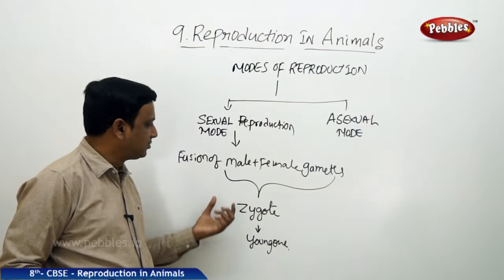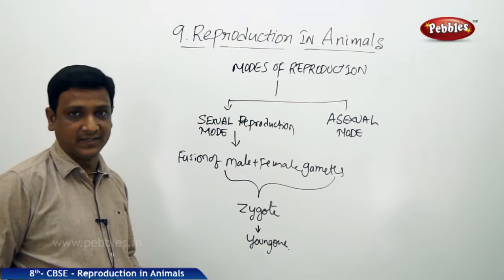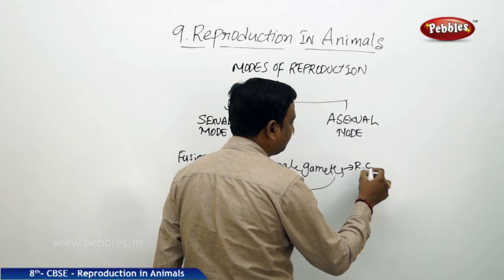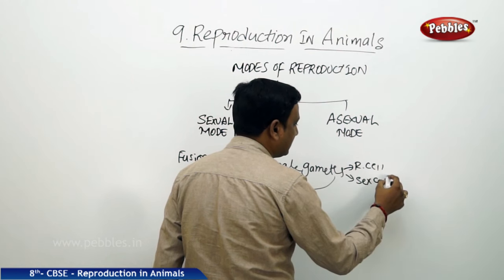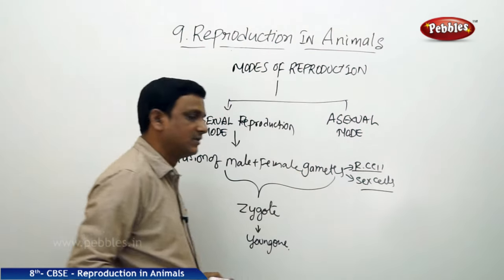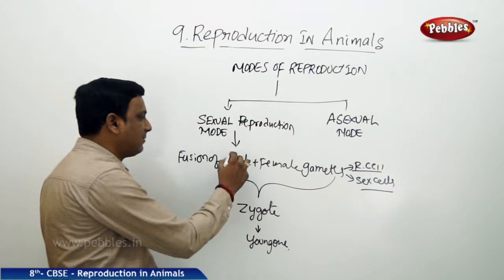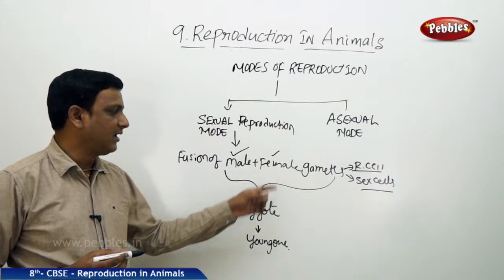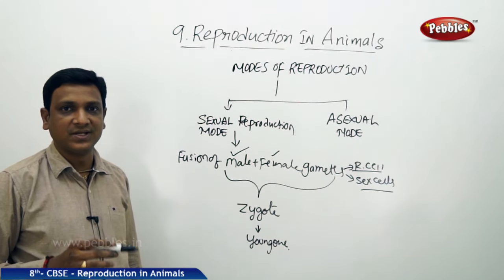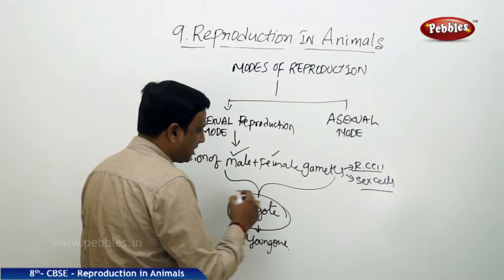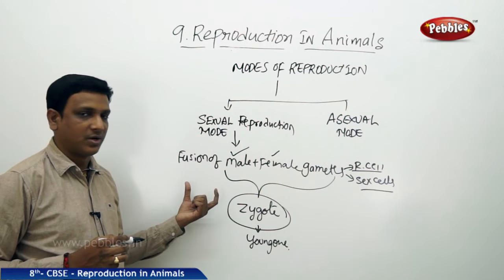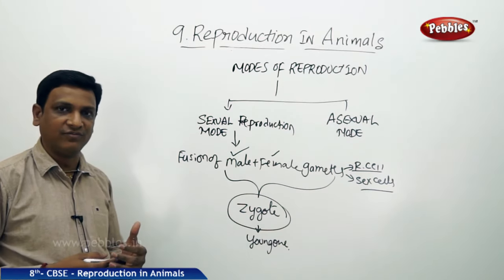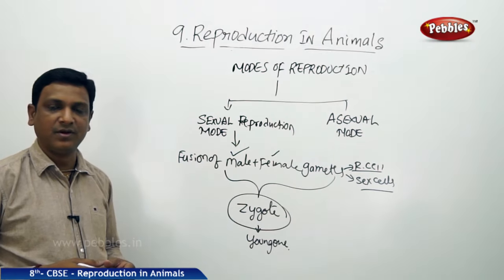For sexual reproduction, gametes are required. Gametes are nothing but reproductive cells, also called sex cells. Two types of gametes are required: male gametes and female gametes. Male gametes are contributed by the male organism, and female gametes are contributed by the female organism. These two gametes must fuse together to form the zygote. Male gametes are produced in the body of the male, and female gametes are produced in the body of the female. To produce these gametes, male and female organisms have special reproductive organs.